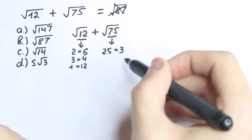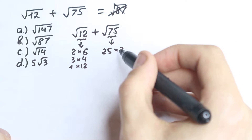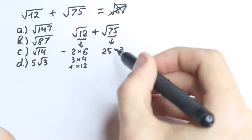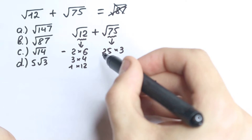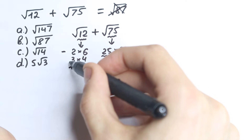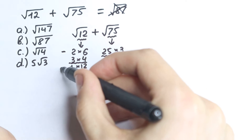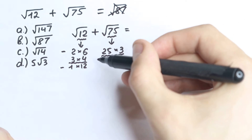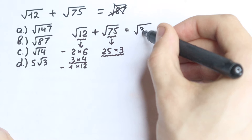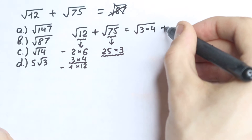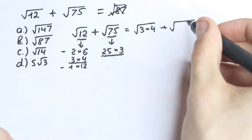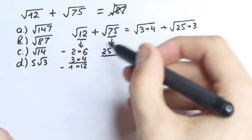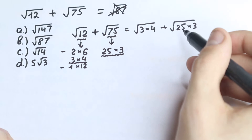What is the main logic here? We need to find the same values appearing in both expressions. For 12 we have 2 and 6, or 3 and 4. For 75 we have 25 and 3. The matching value is 3 — so we need 3 times 4 for 12 and 25 times 3 for 75. We reject the other expressions. So 12 is expressed as 3 times 4, giving us square root of (3 times 4), plus square root of (25 times 3).